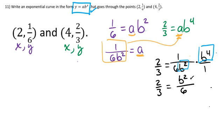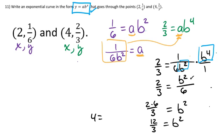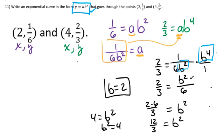Multiplying both sides by 6, I get B squared equals 2 times 6 over 3, which is 12 over 3, which equals 4. So B squared equals 4. Taking the positive root, B equals the square root of 4, which is 2. Now I know one of my two parameters.